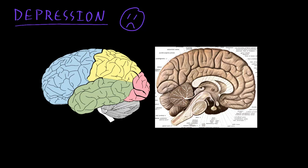Here in this illustration of the brain, we're looking at the outside of the brain and the different lobes of the cerebrum — the top part of the brain — labeled with different colors. A couple of specific areas that seem to have abnormal activity in these studies involve this part of the brain in light blue, which is called the frontal lobe — the lobe that's most toward the front of the brain.